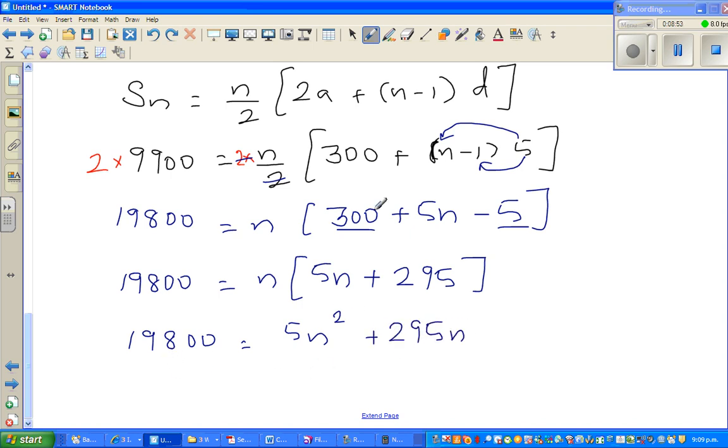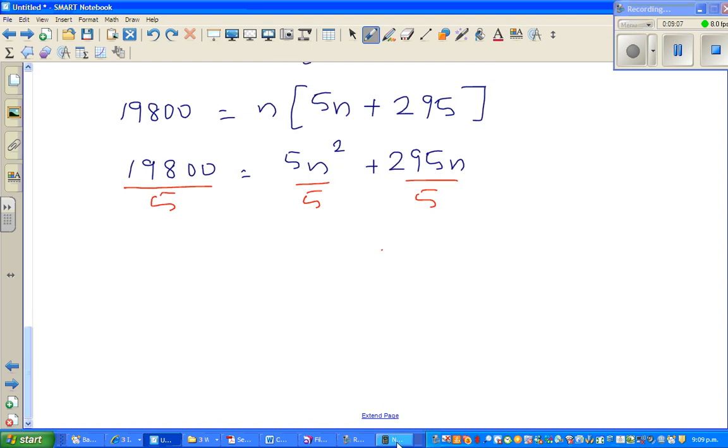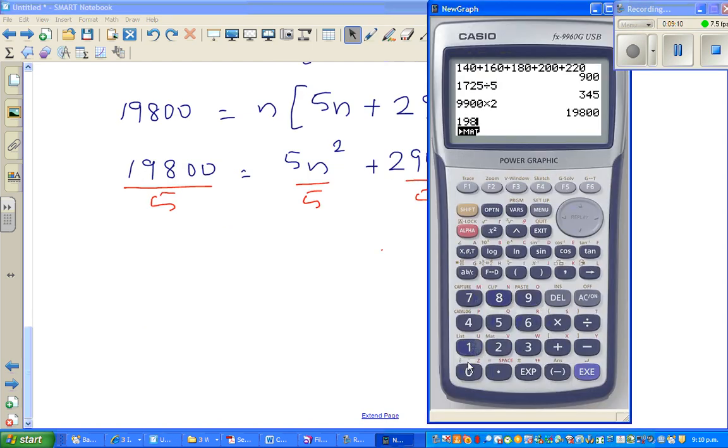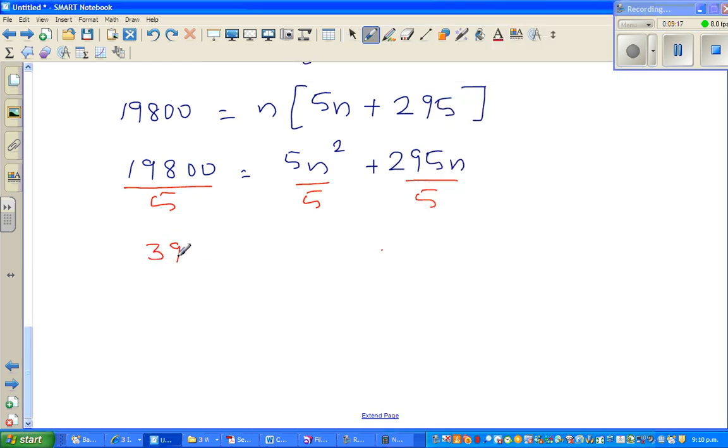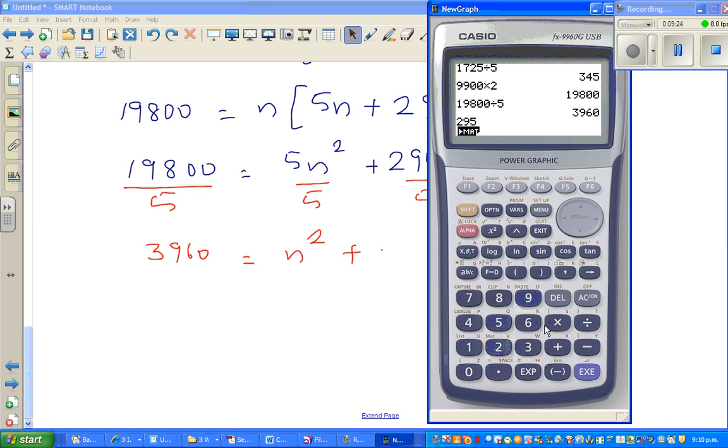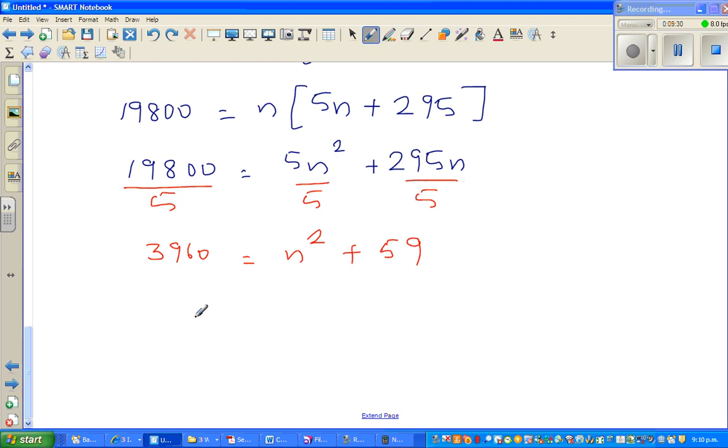Which number goes in all three numbers here? 5 goes in all. So I'm going to divide all by 5 to make this smaller. I'll use a calculator: 19800 divided by 5 is 3960, and 295 divided by 5 is 59. So now this has become a quadratic equation: n squared plus 59n minus 3960 equals 0.